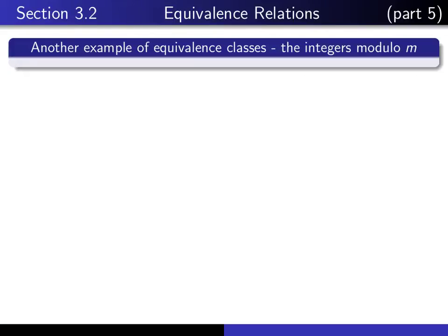This is part 5 in our series of lectures on section 3.2 on equivalence relations. In this lecture we're going to look at another example of equivalence classes, and we're going to apply it to the set of integers modulo m.